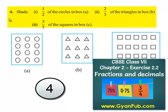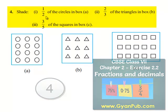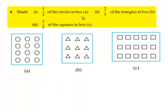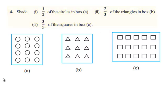Now let us move on to the fourth question: shade 1 by 2 of the circles in box A, 2 by 3 of the triangles in box B, and 3 by 5 of the squares in box C. So let us first find out 1 by 2 of the circles in box A.